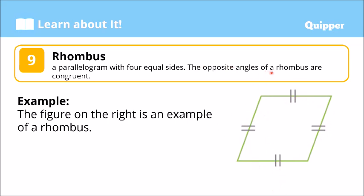The opposite angles of a rhombus are congruent — yung opposite angles ng rhombus ay congruent. So ang angle na yan is equal sa angle dito, at ang angle na ito at angle na yan ay equal din. Again, opposite angles of rhombus are congruent.